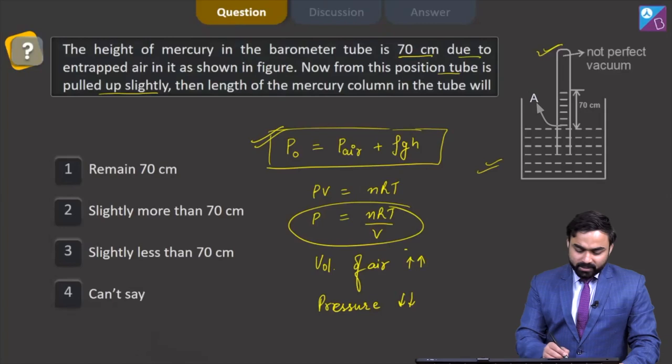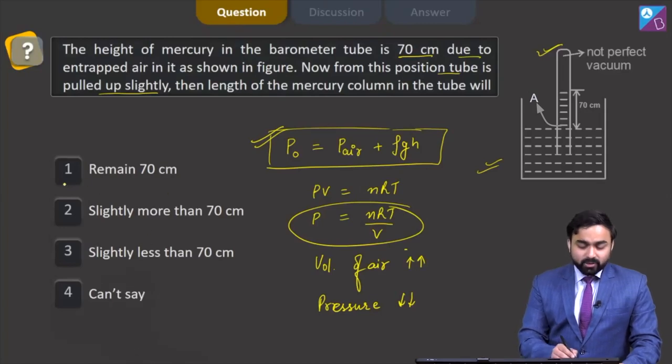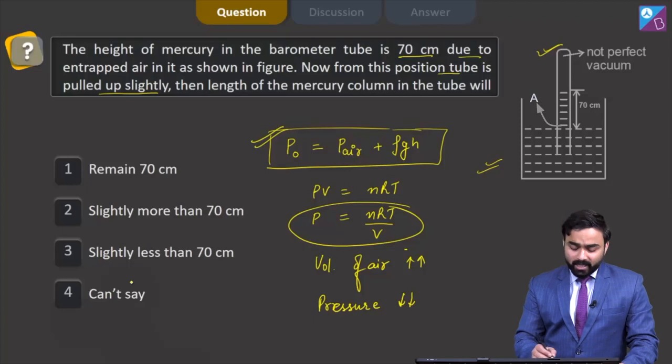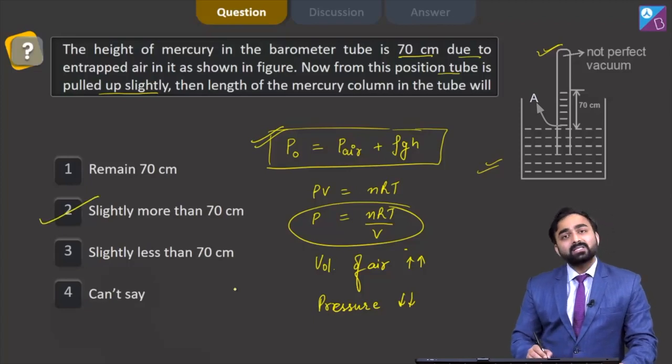Therefore, among the options mentioned here: first option is remains the same, slightly more than 70 centimeter, slightly less than 70 centimeter, or can't say. So, the value of h will increase. I can say that it will be slightly more than 70 centimeter.